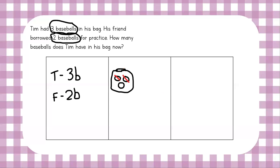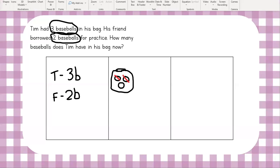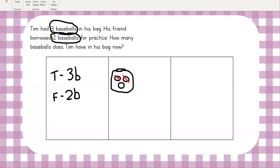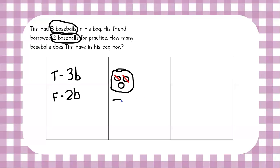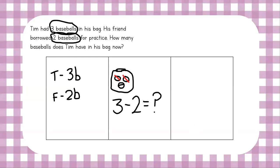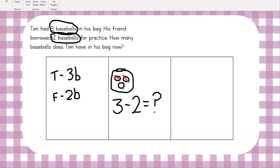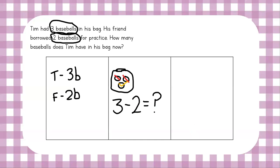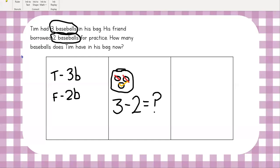So we know we're going to be using subtraction. Let's write a number sentence that shows subtraction. We're going to take our starting number, which is three baseballs, and we're going to subtract the two that his friend borrowed: three minus two. We want to solve how many are left over. Looking at our picture, we can count that there is only one left over. So that tells us that our answer is going to be one.